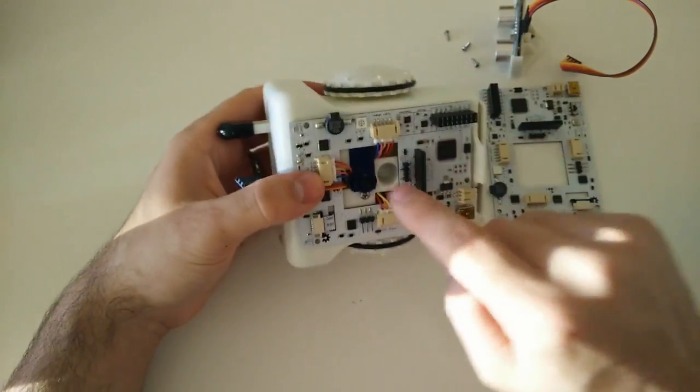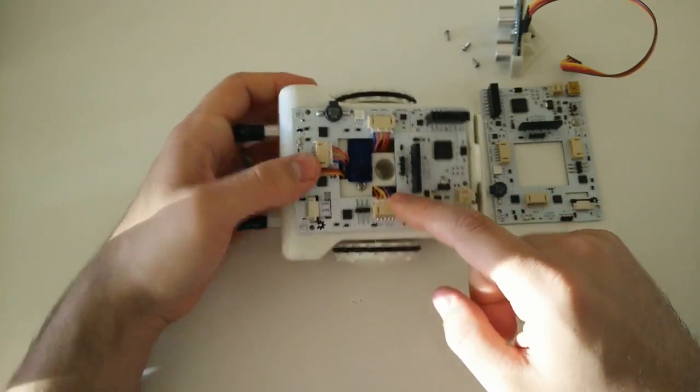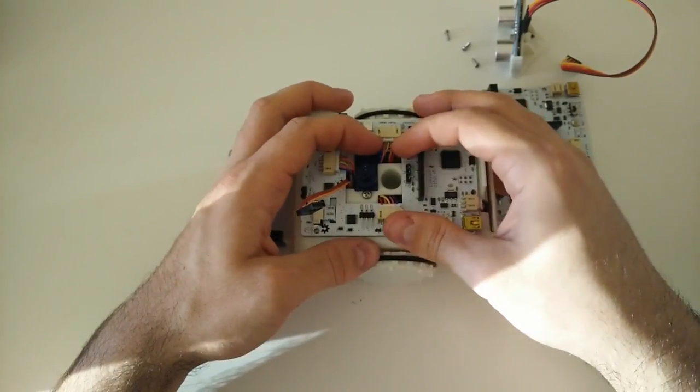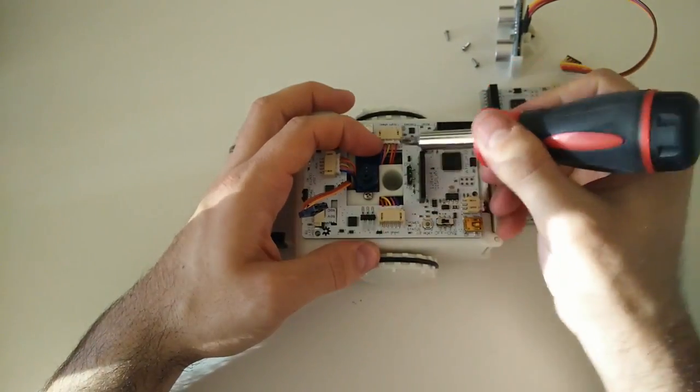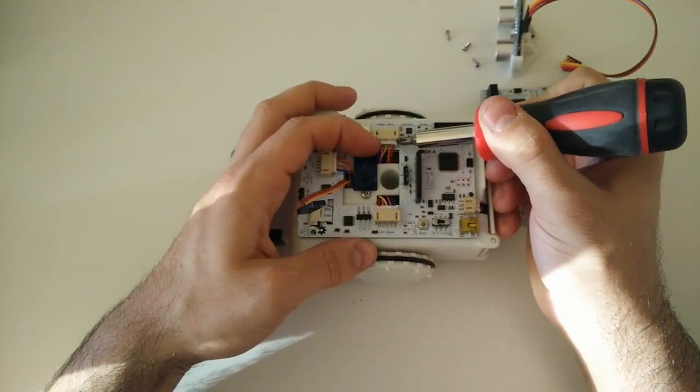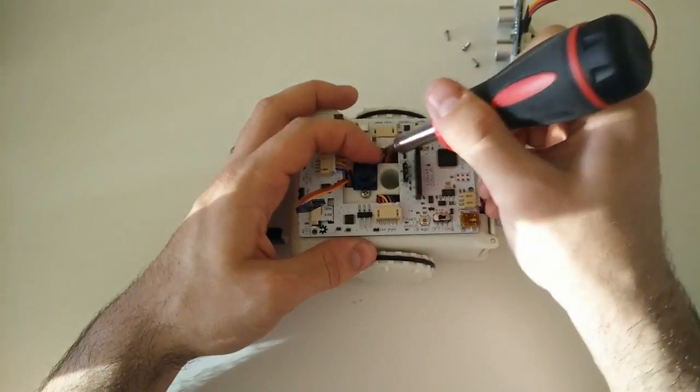Next we're going to be taking out these stepper motor connectors. There's three of them here, here, and here. You're going to put your fingers on the sides and kind of wiggle it out. Sometimes you can use a screwdriver to kind of wedge it in there to get the wiggling started, but it shouldn't take too much force.